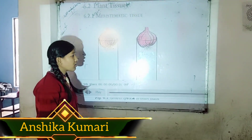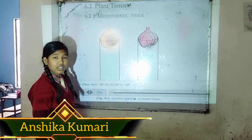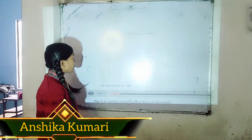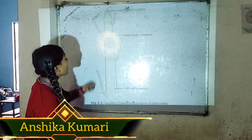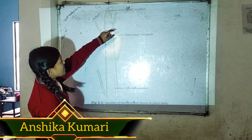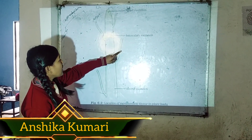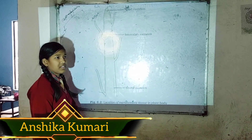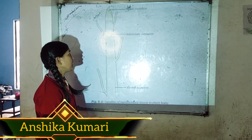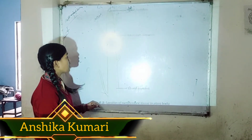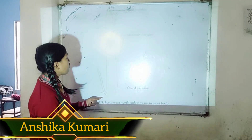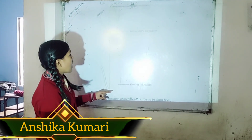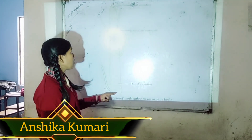Meristematic tissue — the growth of a plant occurs only in certain regions. Meristematic tissue is classified as apical, intercalary, and lateral meristematic tissue. Apical meristematic tissue is present at the growing tips of plant stems or roots, and increases the length of the stem and root. Intercalary meristematic tissue is found at the base of leaves or nodes.